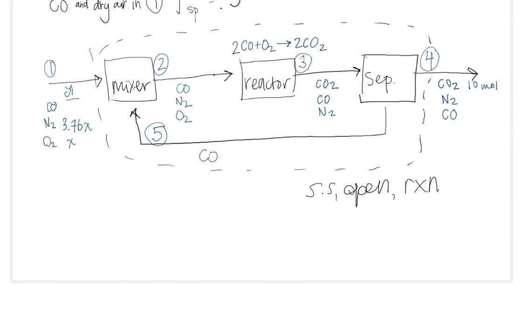Next, we will, just as before, count our unknowns and our streams, and we have a reaction so there is an extent of reaction to take into account. The only two streams that cross the system boundary are one and four, so these are the only ones we'll be looking at. And so you can see there's three here and three here, so it makes a total of six unknowns, one extent of reaction. We still have the same four species that we had before: carbon monoxide, N2, O2, and carbon dioxide. So total four mass balances.